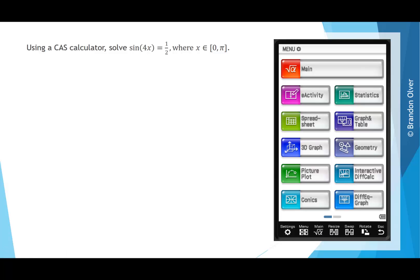Using a CAS calculator, solve sin(4x) = 1/2, where x is an element of [0, π].